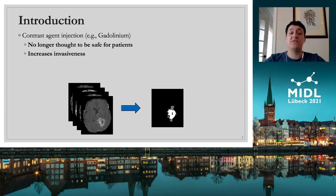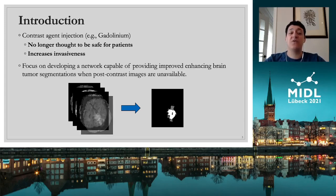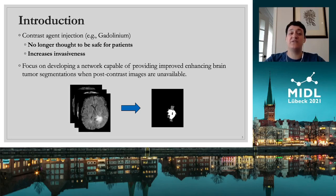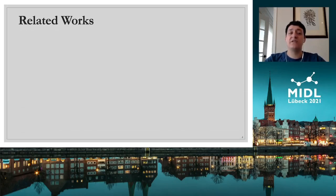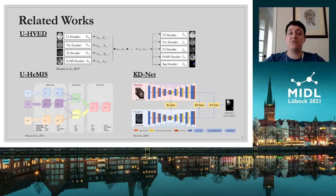Unfortunately, without these post-contrast images, the segmentation of these enhancing tumors and lesions becomes extremely difficult. Despite this, in this work we focus on attempting to eliminate the need for these sequences in the context of brain tumor segmentation by developing a network capable of providing improved enhancing tumor segmentations when post-contrast images are unavailable. While there are state-of-the-art techniques which attempt to address the problem of brain tumor segmentation with missing MRI sequences, they do not focus on this specific problem.